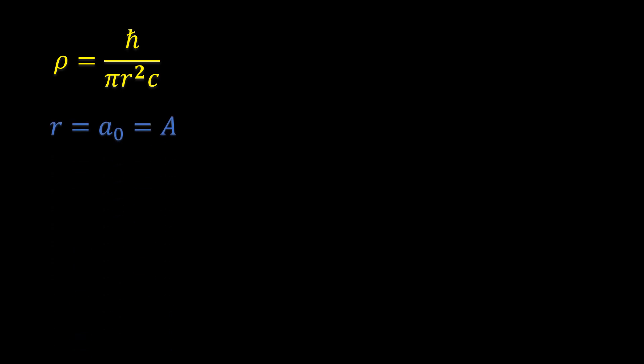We can also write the density as h-bar over pi times radius squared times c, where we have simply replaced a with the expression for the area since the cross-sectional area is circular. Taking the upper limit of the amplitude of light, which is the ball radius as we saw in part 1, we can say that r is equal to the ball radius. Multiplying and dividing the right-hand side by c, we get this.